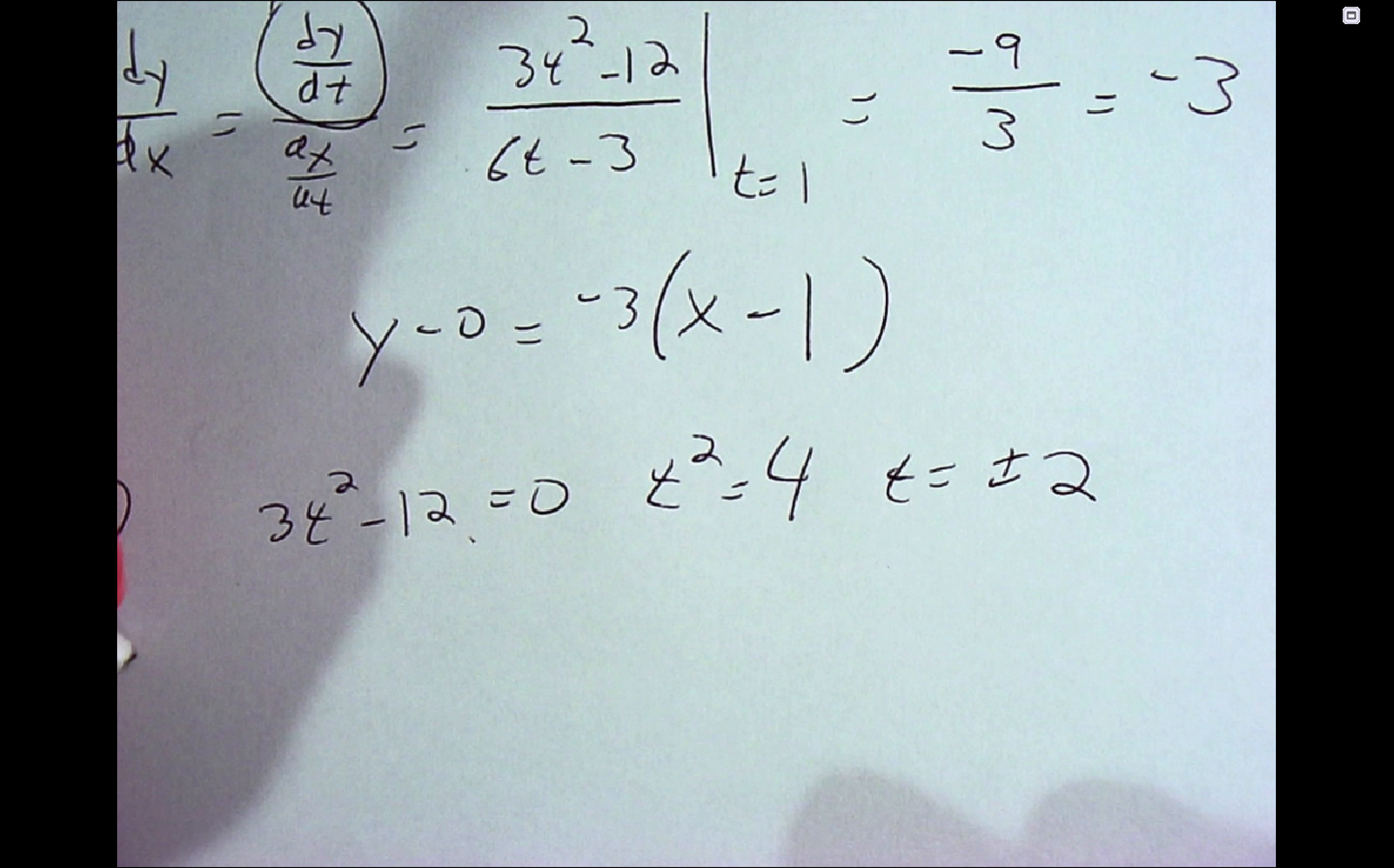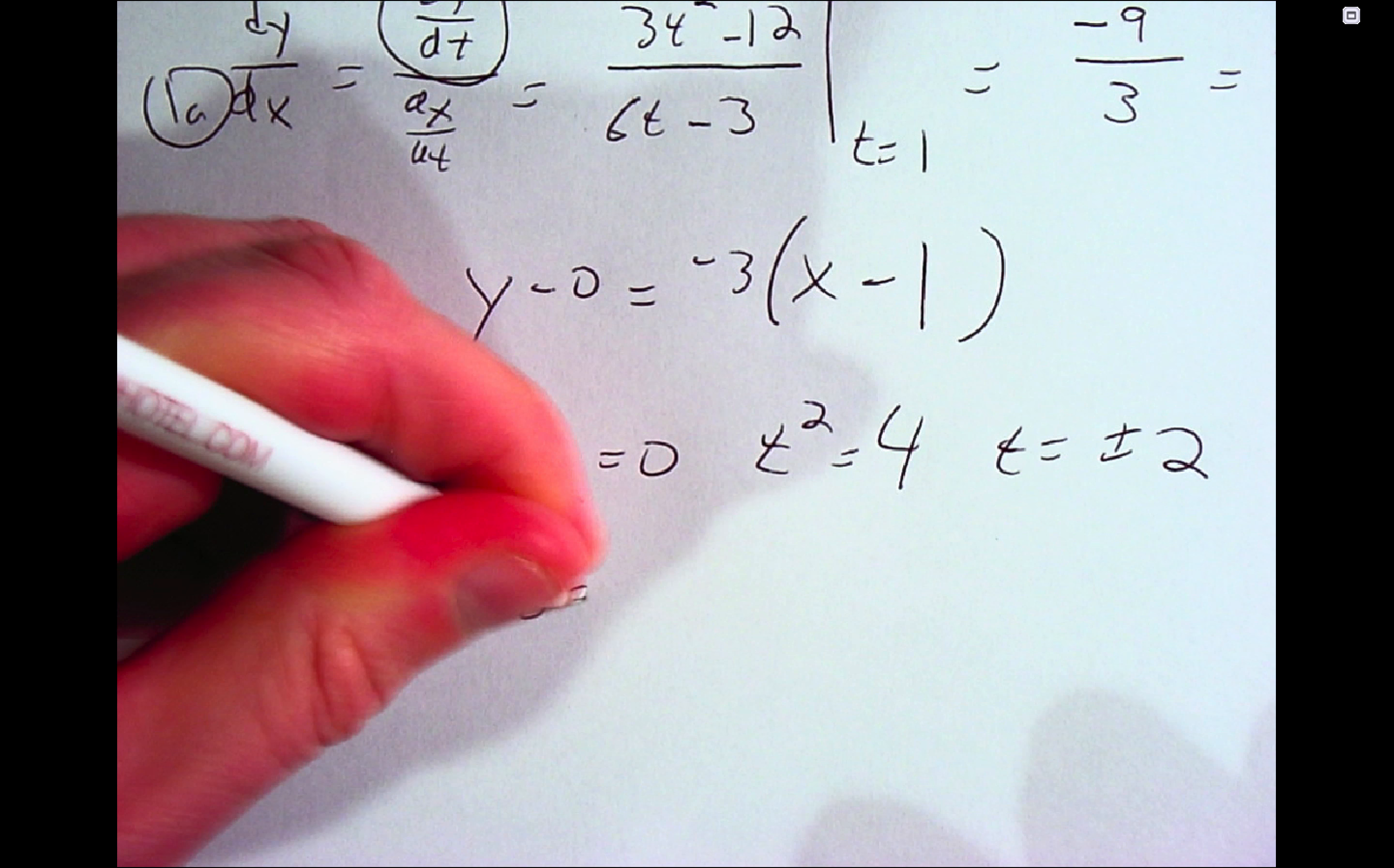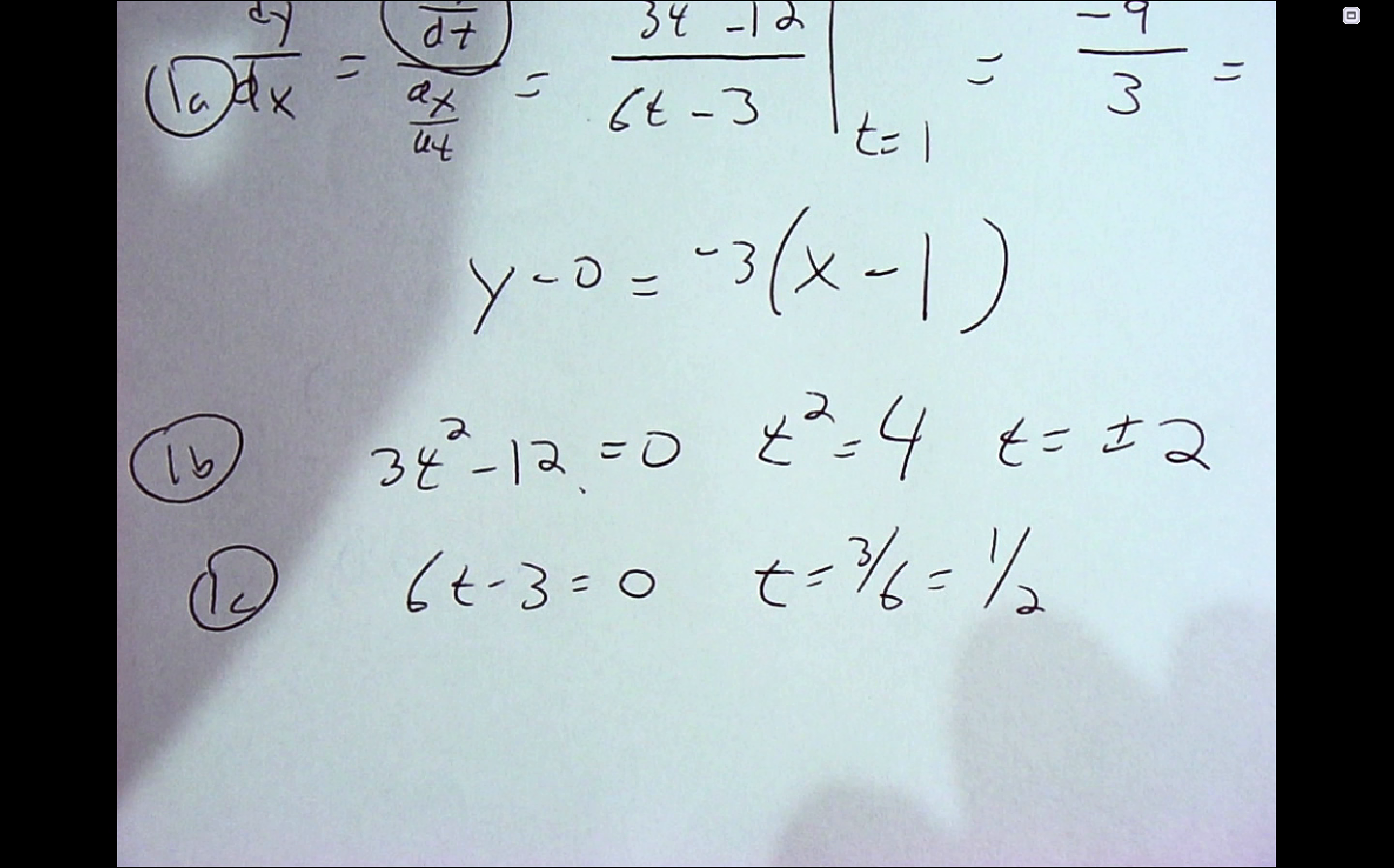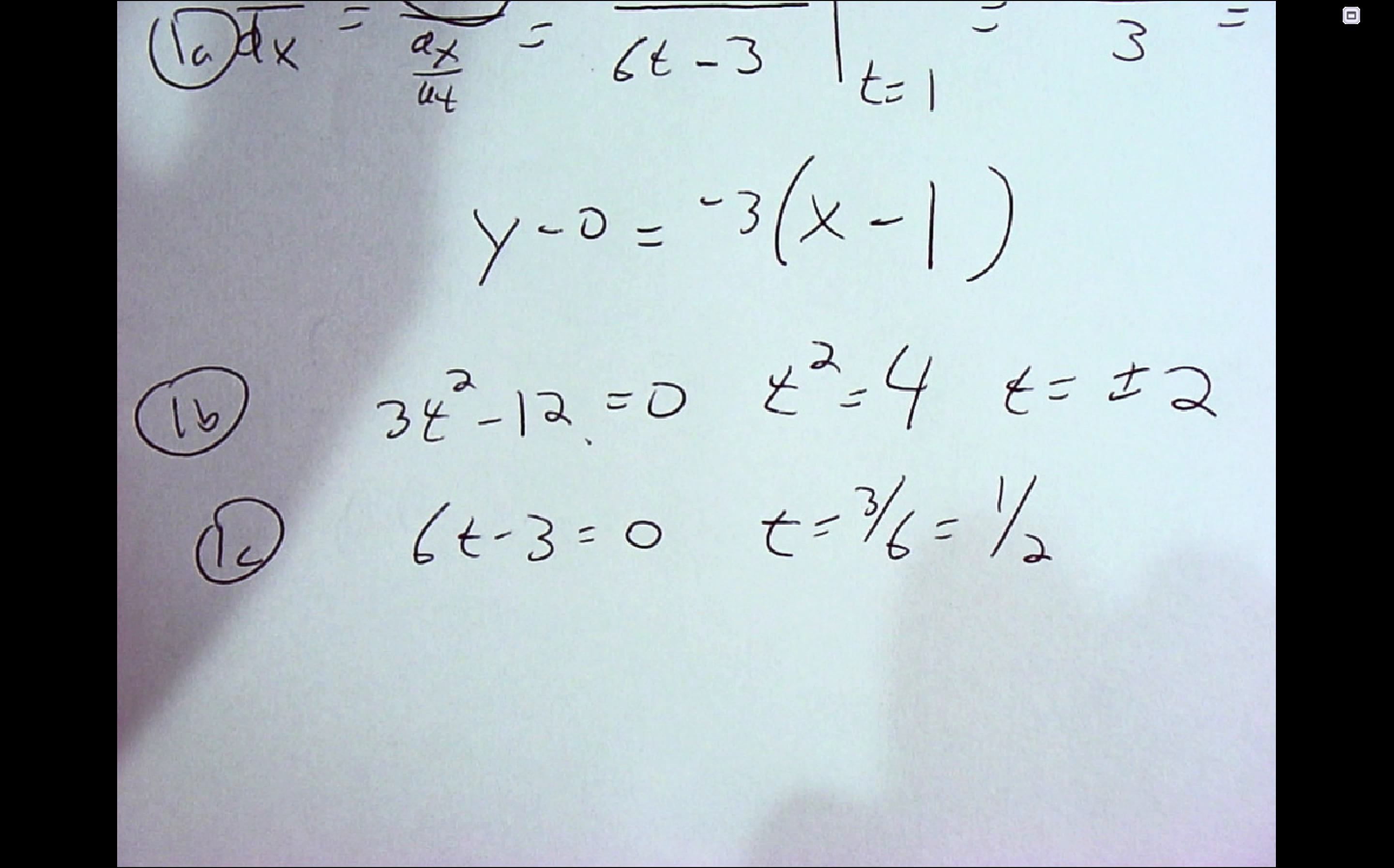Where is the tangent line vertical? Tangent line is vertical when the denominator of the slope is 0. And so that's when dx/dt equals 0. So we get t equals 3 sixths or 1 half. And again, you could plug that into the equation to find the values of x and y.